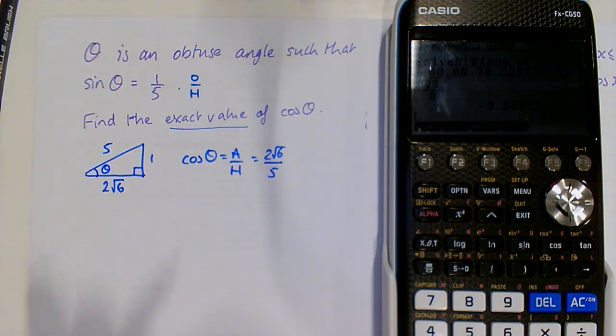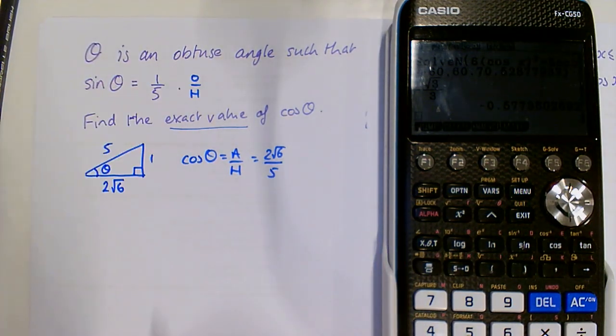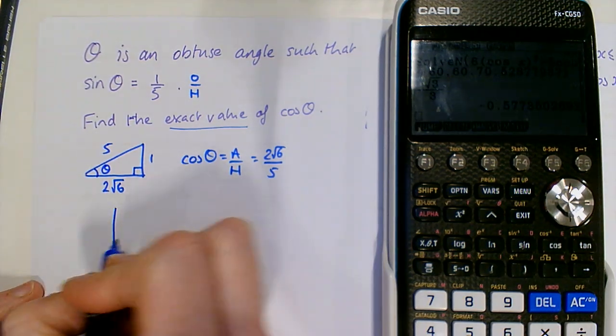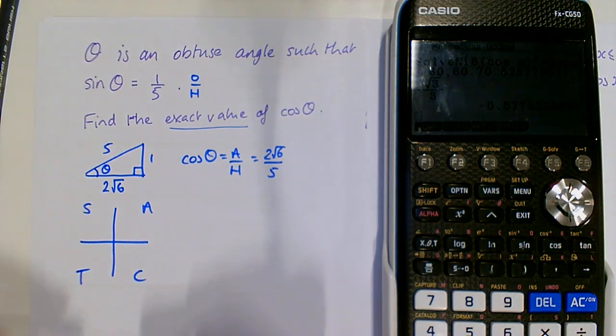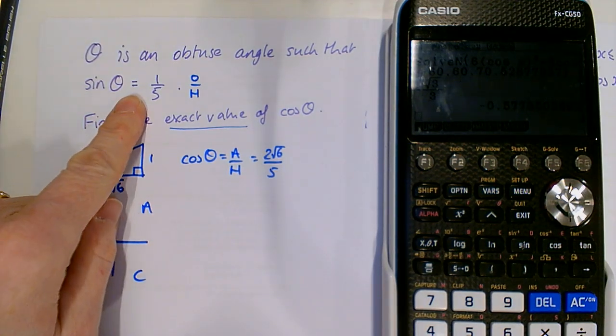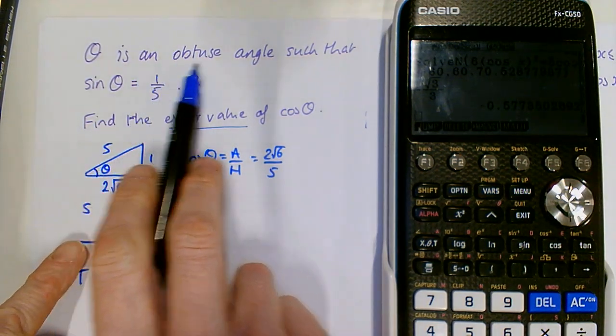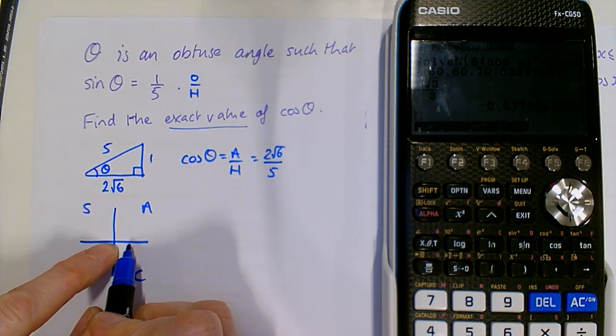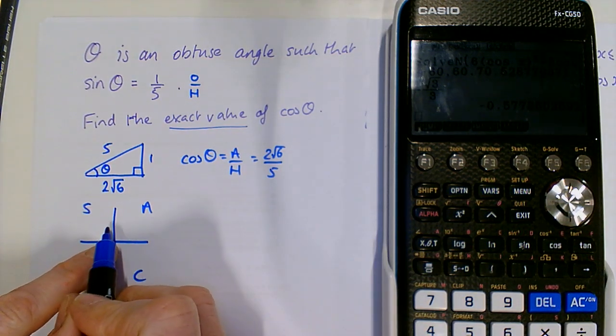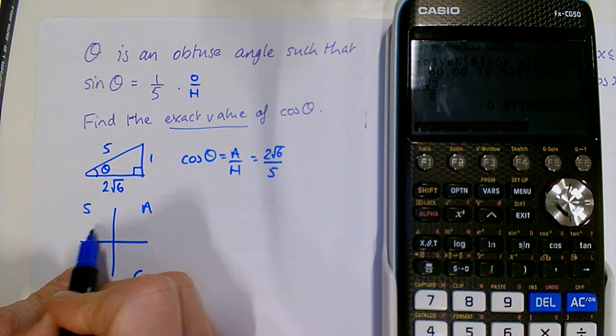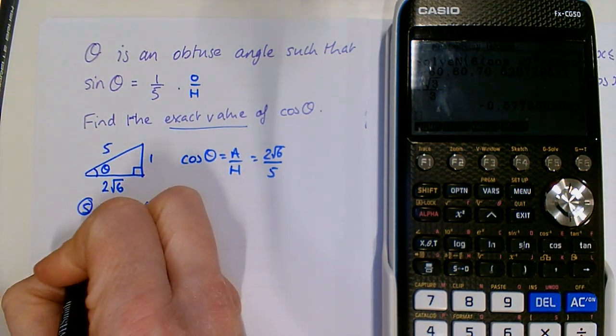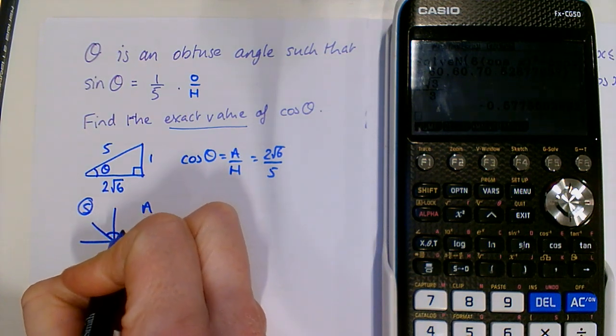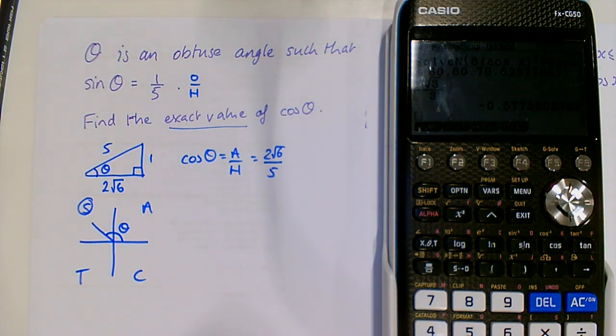But now we need to start thinking about theta being an obtuse angle. So I'm going to draw myself a CAST diagram. And we know that sine is positive, but we're also told we have an obtuse angle. We measure all our angles from 0 anticlockwise, so this quadrant here is the quadrant of obtuse angles. So we know that theta is that angle there.